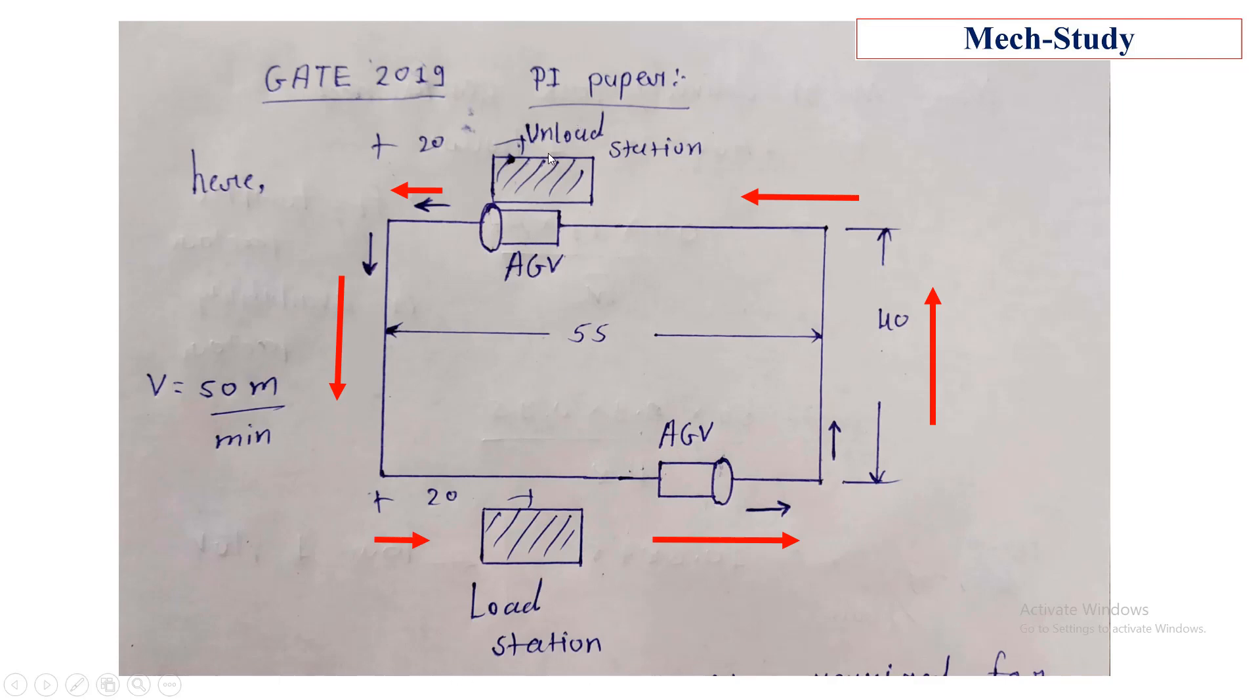Here is the unloading station. Here is the loading station, and both are 20 meters apart from the extreme left side. AGVs are moving with 50 meters per minute velocity.